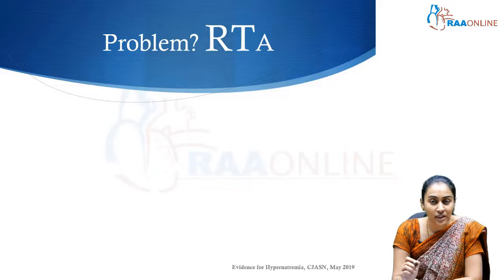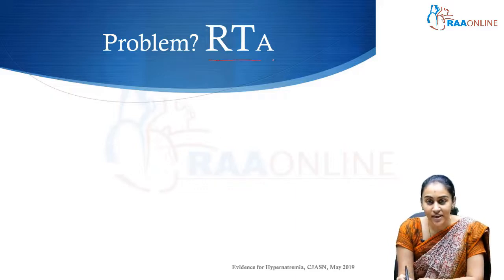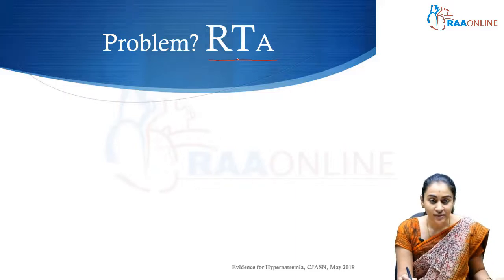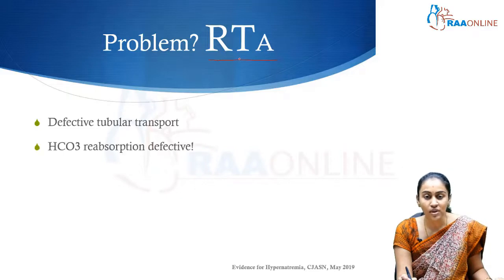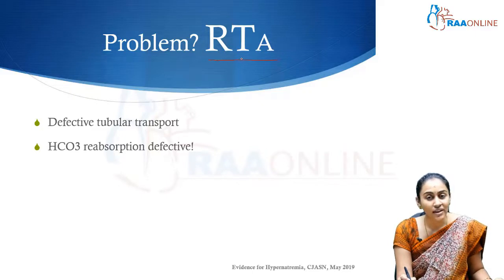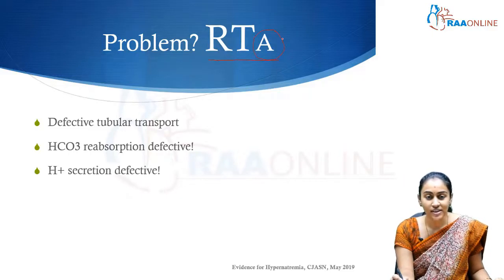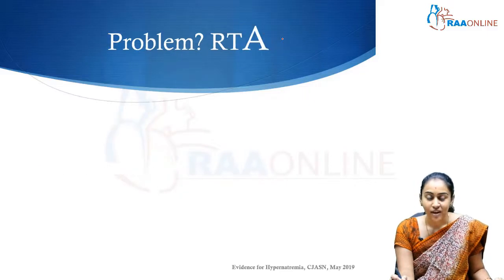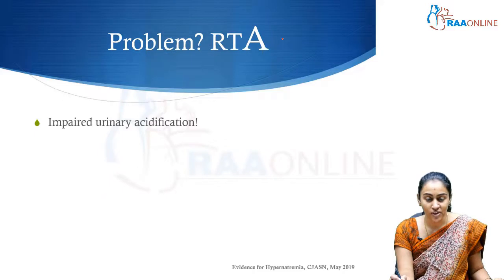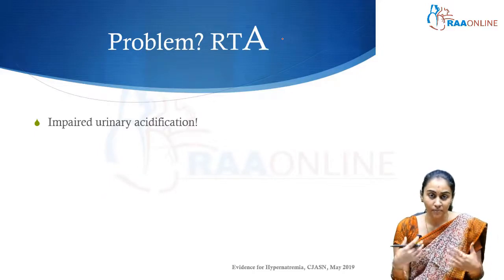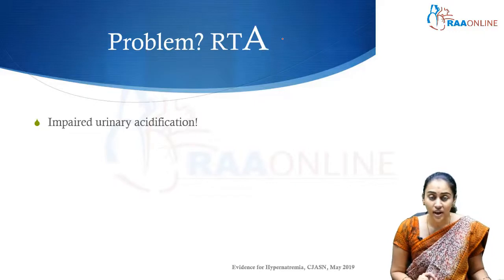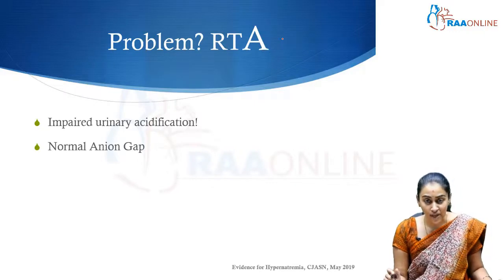So what exactly is the problem in renal tubular acidosis? As the name itself says, there is a problem in the renal tubules — a defective tubular transport — which results in either a defect in bicarbonate reabsorption or a defect in hydrogen ion secretion. As a result, the patient ends up with acidosis due to impaired urinary acidification.